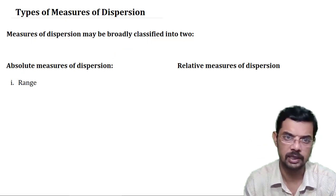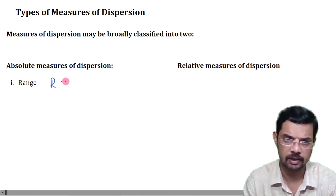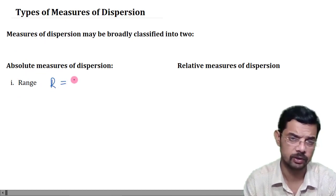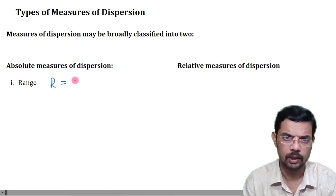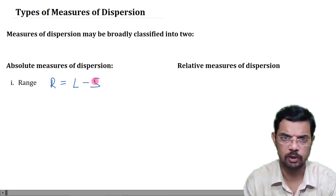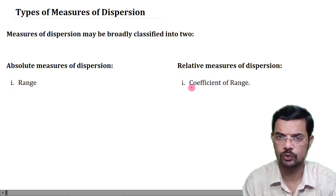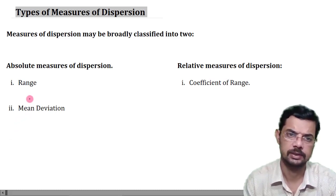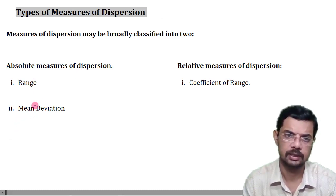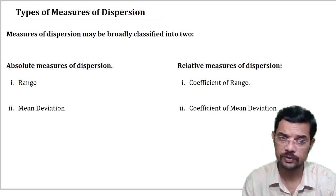The first absolute measure of dispersion is range. Range R is defined as the highest observation minus the smallest value in the given data set — the largest value minus the smallest value. The corresponding relative measure of dispersion is known as the coefficient of range. The second absolute measure is mean deviation, and the corresponding relative measure is called the coefficient of mean deviation.